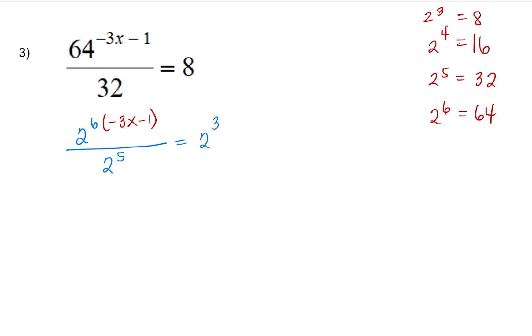Now, remember, we have a fraction on the left-hand side. We want to make these all be on the same level as a numerator. So we are going to move the denominator all the way to the top, which is the numerator. Now, what's going to happen? We're going to drop the original 2 to the power 6 times negative 3x minus 1. Now, bringing the 2 to the 5th in the numerator makes the exponent negative, because we are changing the location of 2 to the 5th.